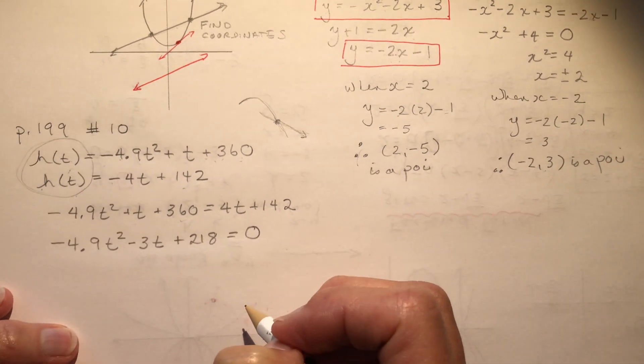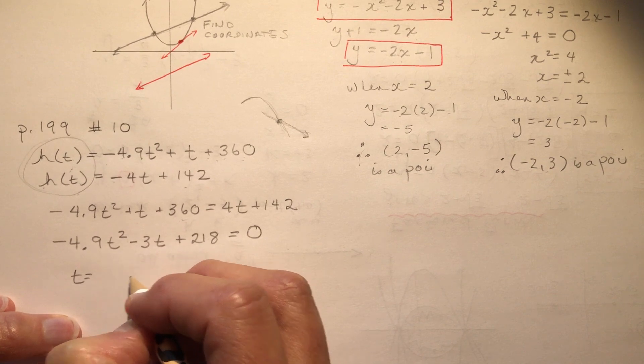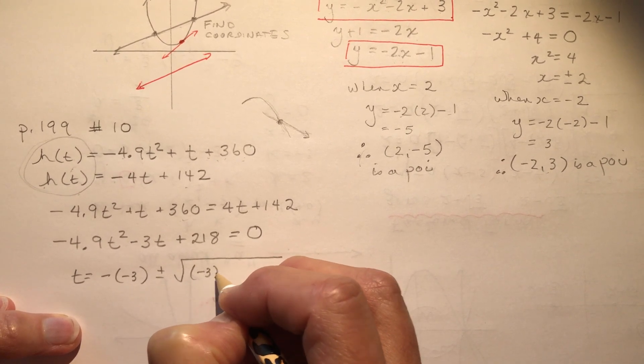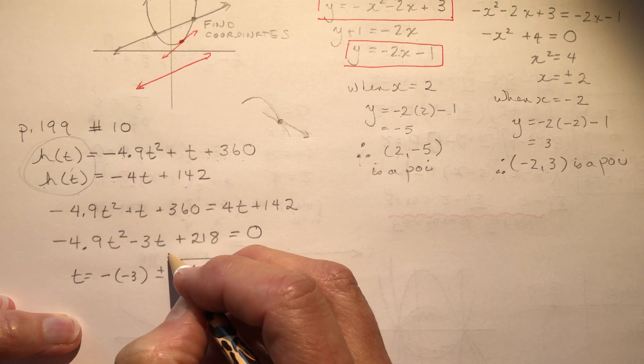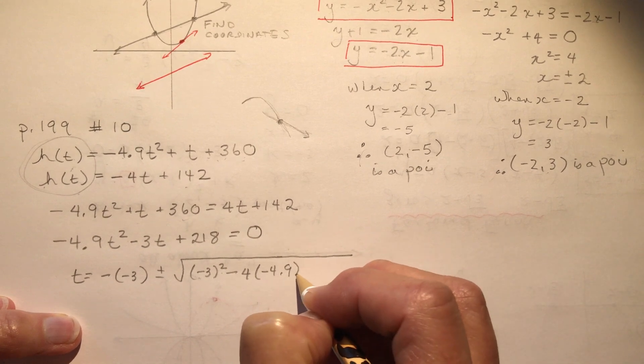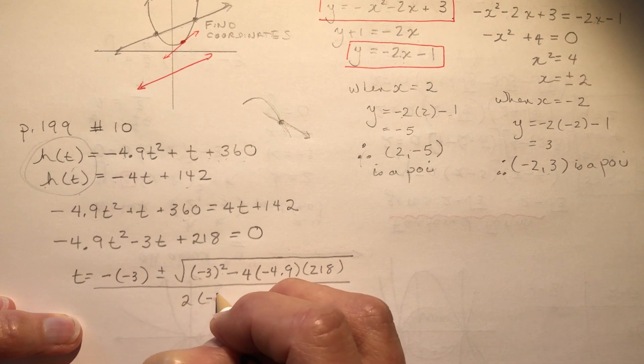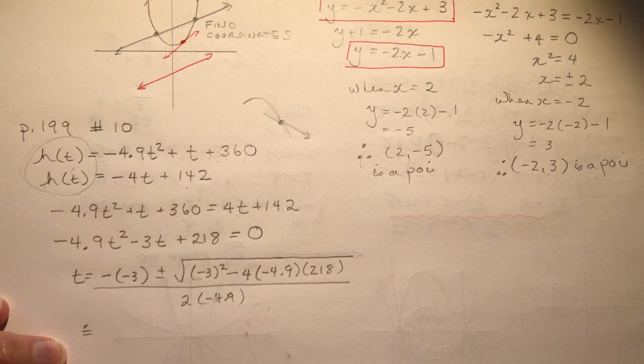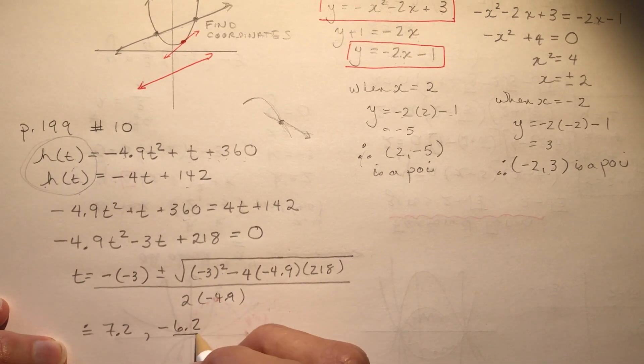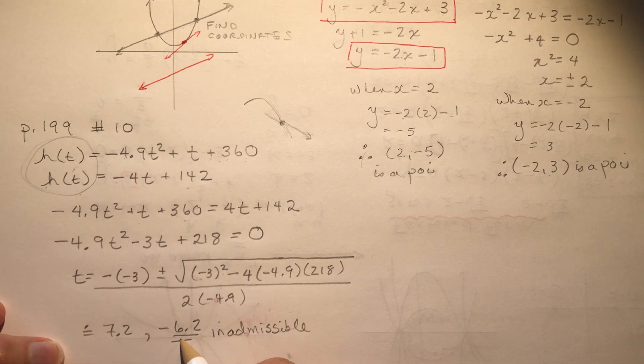And now I would use quadratic formula to solve for t. Okay, so I don't know if you need me to do that for you, but I think by now you should have this pretty well figured out. Negative b plus or minus square root, I'll do it quickly, b squared. Notice how I put this in brackets to make sure I don't make a technical error here. b squared minus 4 times minus 4.9 times c is 218. And don't forget the whole thing has to go over 2a, 2 times minus 4.9. So I'm just going to give you the answer to this. I got 7.2 and minus 6.2, which is inadmissible in the context of this word problem.